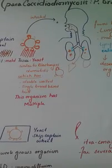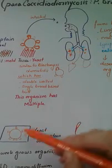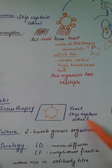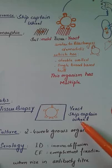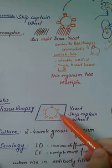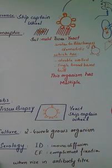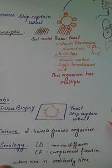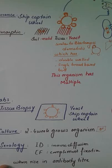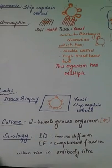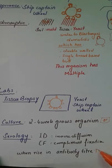To identify this organism, a tissue biopsy is taken from the affected site. On microscopy, the yeast itself shows the characteristic ship-wheel or captain's wheel appearance. If grown on culture, the mold form with various hyphae can be seen, and this culture is normally grown over two to four weeks. Serology can also be performed by immunodiffusion and complement fixation, which indicates an increase in antibody titer confirming infection.